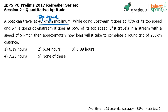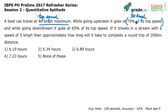While going upstream it goes at 75 percent of its top speed. What is 75 percent of 40? 75 percent of 40 is 30 kilometers per hour. So the upstream speed of the boat is 30 kilometers per hour. While going downstream it goes at 65 percent of its top speed — what will be 65 percent of 40?